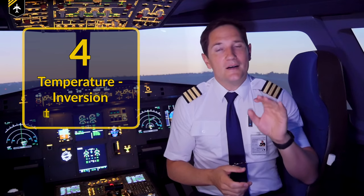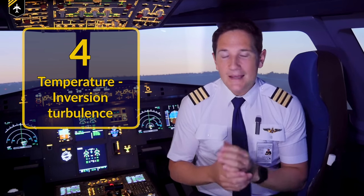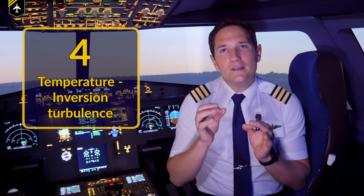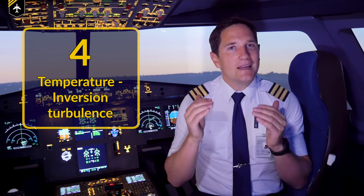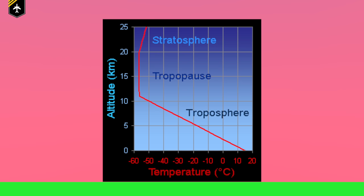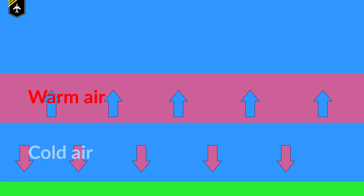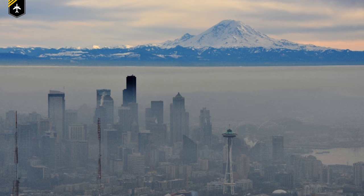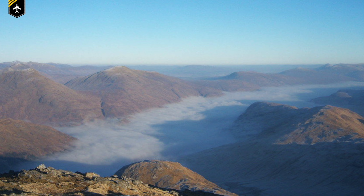Number four: temperature inversion turbulence. A temperature inversion, also called thermal inversion, is a reversal of the normal behavior of temperature in which a layer of cool air at the surface is overlain by a layer of warmer air. Normally, air temperature decreases with altitude. As this is an unusual weather event, the different temperature layers start mixing with each other vertically, meaning updrafts and downdrafts can occur between the layers, causing your plane to experience turbulence. These turbulences are more common during wintertime and within valleys.